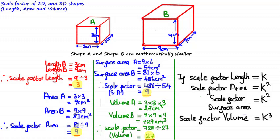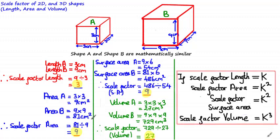Whether you're dealing with 2D or 3D similar shapes, the scale factor of area and surface area will always both equal the square of the scale factor of length, because they share the same dimensions — both area and surface area are measured in centimeters squared. So do jot this down so you can refer to it in the next video, where we'll be going through some example questions.